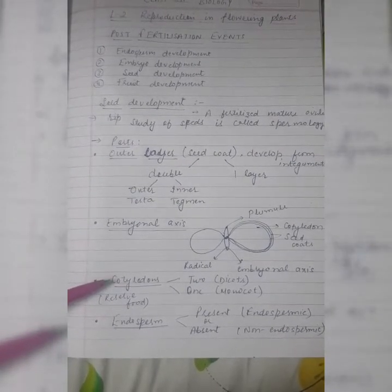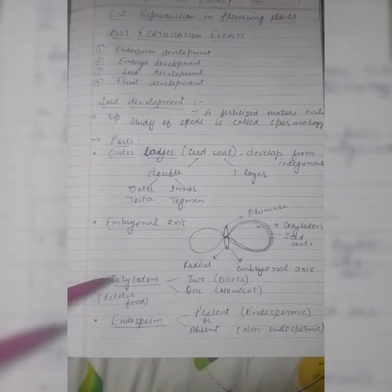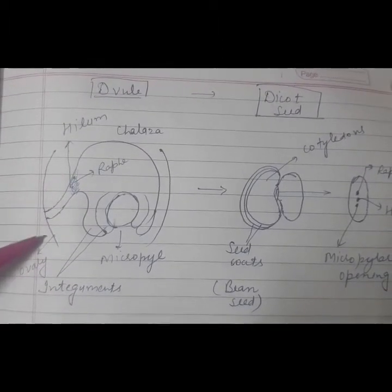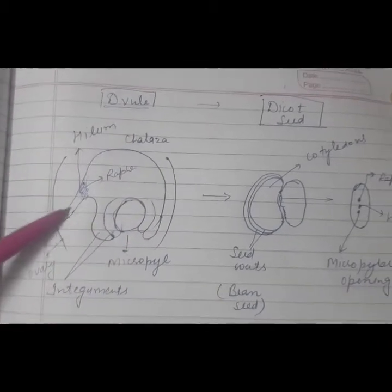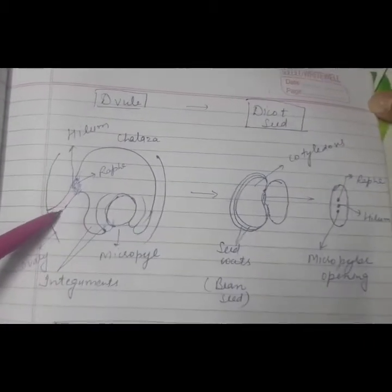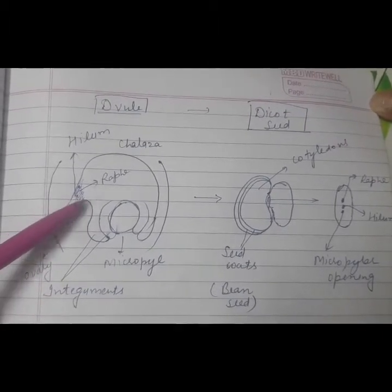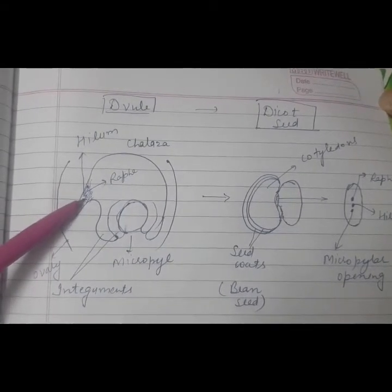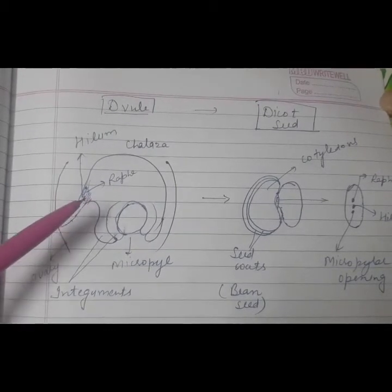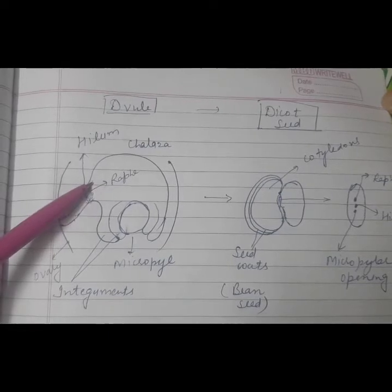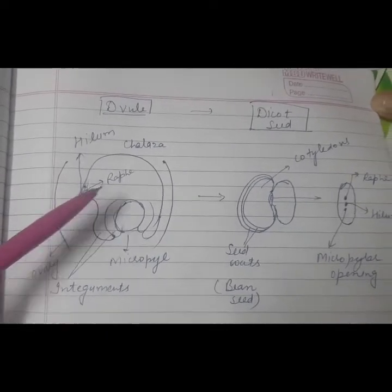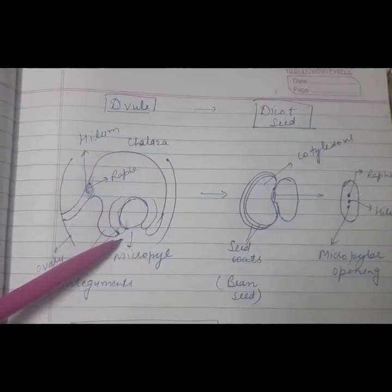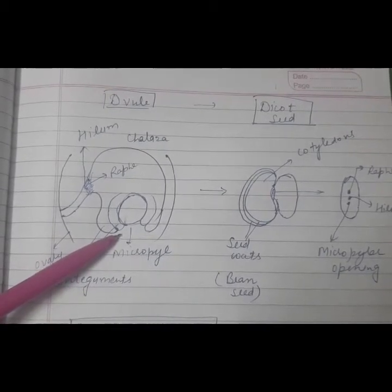Let us now see from which part of the ovule each part of the seed is formed. Looking at the structure of an ovule: this is the ovary, and the ovule is present inside the ovary. The attachment is the funicle, and the point at which the ovule attaches to the funicle or ovary is called hilum. The tissue present towards the ovule is called raphe. The chalazal end and the micropylar end — through the micropyle, water and oxygen will enter the seed to help germination.